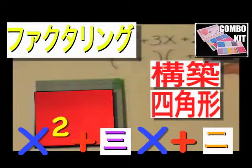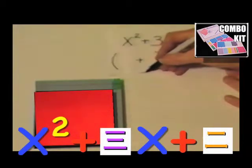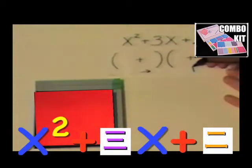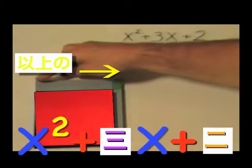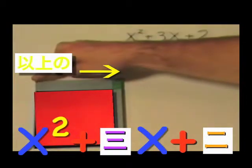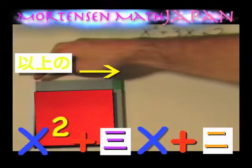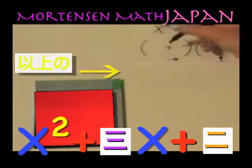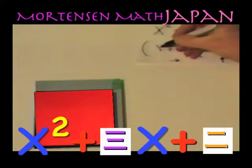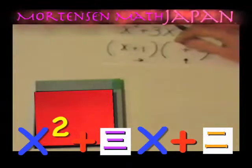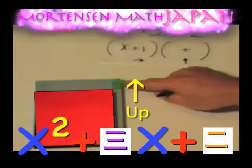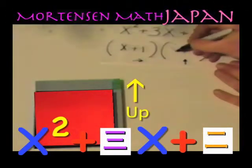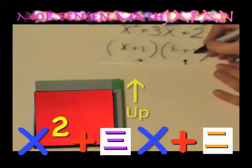Now we will record the factors. We have an over distance and an up distance. Our distance over is — from here to here — I don't know, I can't count it, so it is X. X plus one more is our distance over: X plus one. Our distance up is X plus one, two: X plus two.